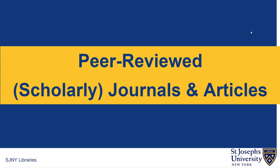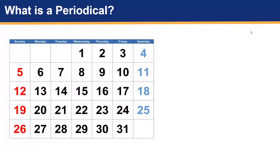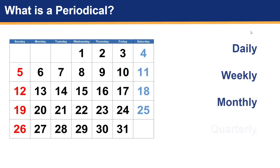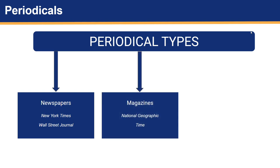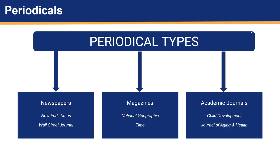Your professor has told you to go and find some peer-reviewed articles in a periodical, but what exactly does that mean? A periodical is a publication that is issued at regular intervals. The interval might be daily, weekly, monthly, or quarterly. Types of periodicals include newspapers such as the New York Times and the Wall Street Journal, magazines such as National Geographic and Time, and academic journals such as Child Development and the Journal of Aging and Health.